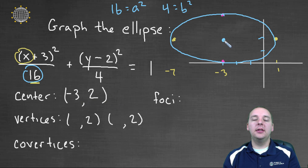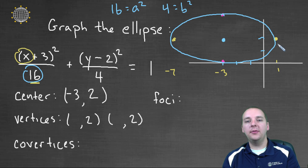Now the vertices: it was 4 units to the right of negative 3, and 4 units to the left of negative 3. So negative 7 comma 2, and 1 comma 2, here and here.